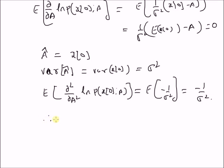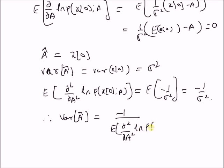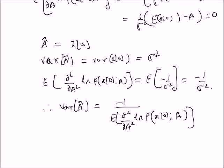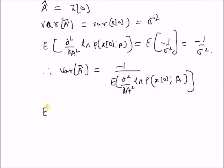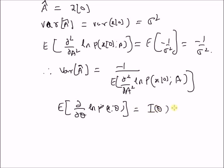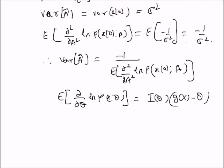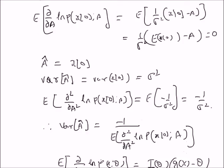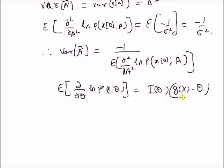According to the Cramér-Rao bound, the variance of a-hat equals the inverse of the negative expectation of the second derivative of the log-likelihood function. Now, we want to verify whether a-hat is the minimum variance unbiased estimator by comparing with the structure given by the first derivative. We can clearly see that I(theta) = 1/sigma-squared and g(x) = x(0).